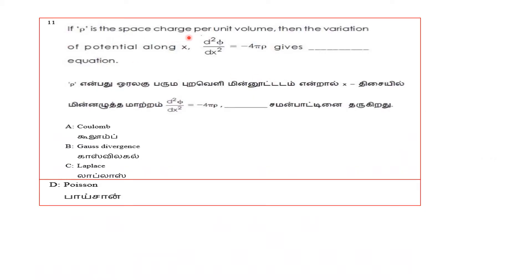Question 11: If rho is the space charge per unit volume, then the variation of potential along x — d²φ/dx² is equal to minus 4π rho. We need to identify what equation this represents. Reading it, we can see Coulomb's law, Gauss's law, and Poisson's equation are all related options.